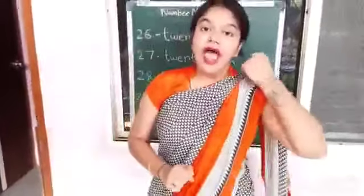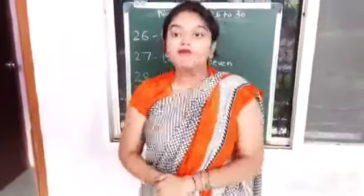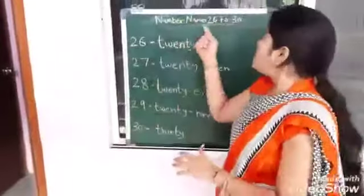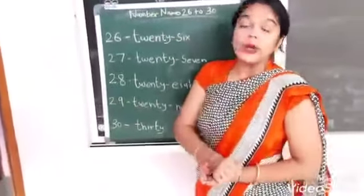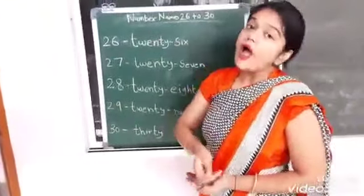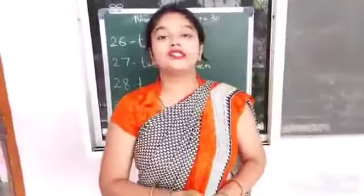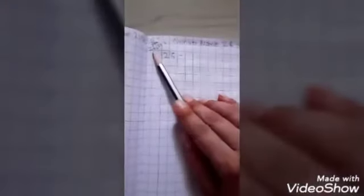So kids, today we had learned the number names from 26 to 30, okay? Now we will continue in our Maths Notebook, okay kids? Check out your Maths Notebook. Write down here, take 21st July 2020. Number name, 26 to 30.